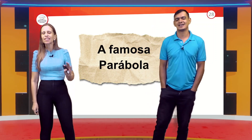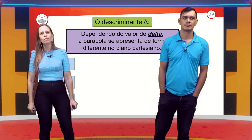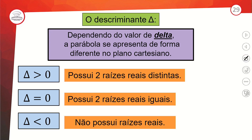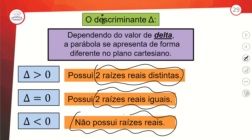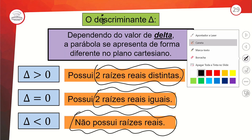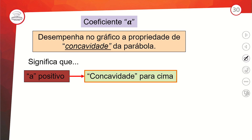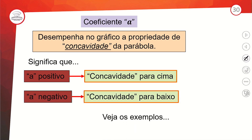Vamos recordar os detalhezinhos da parábola. O delta nos diz muito. Quando o delta é positivo, temos duas respostas diferentes. Quando o delta é zero, duas respostas iguais. E quando o delta é negativo, não possui raízes. Isso é um coração da aula, porque ajuda a resolver várias situações. Quanto à concavidade: A positivo, concavidade para cima — carinha feliz; A negativo, concavidade para baixo — carinha triste.